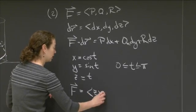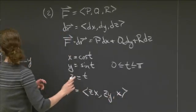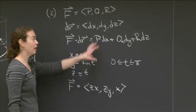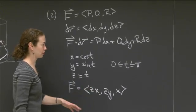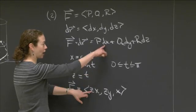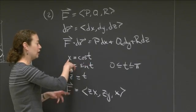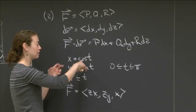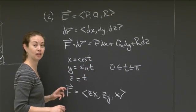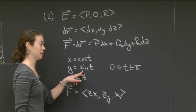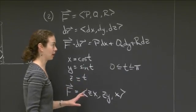Let me write F over here: F is (zx, zy, x). Now I have it closer to put it all together. I'm going to do P dx. P is z times x, and dx—I really need dx/dt, which is -sint. I'm going to replace dx by -sint dt. I'll be replacing dy by cost dt, and dz by dt. I have all the pieces here, I just have to put them together.